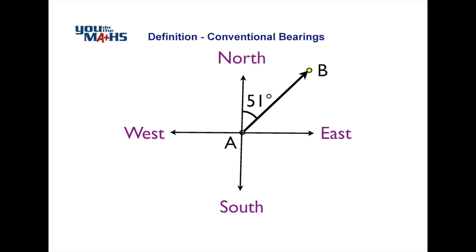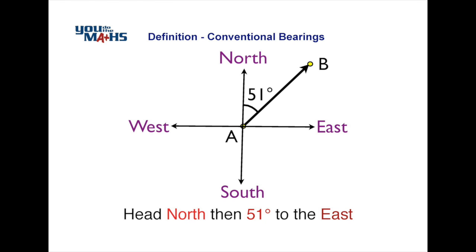So our conventional bearing in this case would be we're 51 degrees away from north in the easterly direction, or another way of saying it is to head north and then move 51 degrees towards the east. We can abbreviate that in a form that's more commonly used by saying north 51 degrees east.